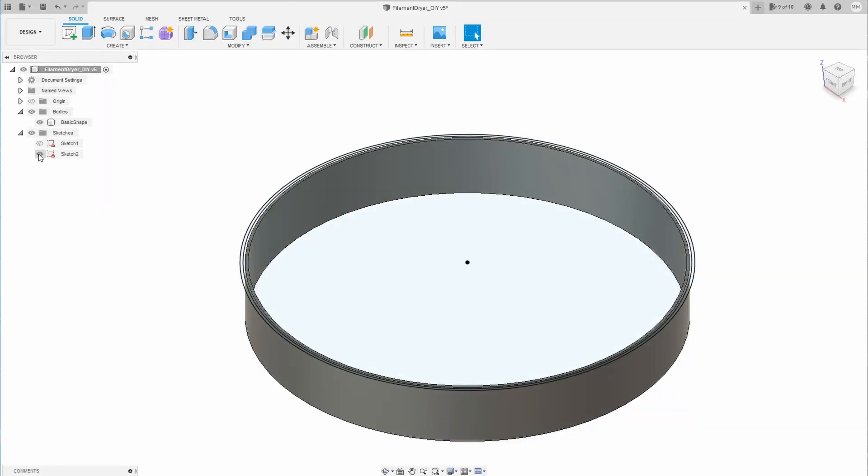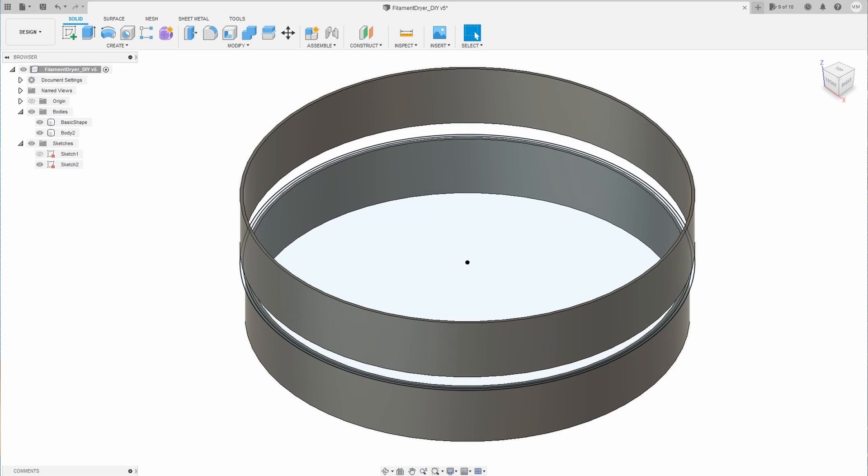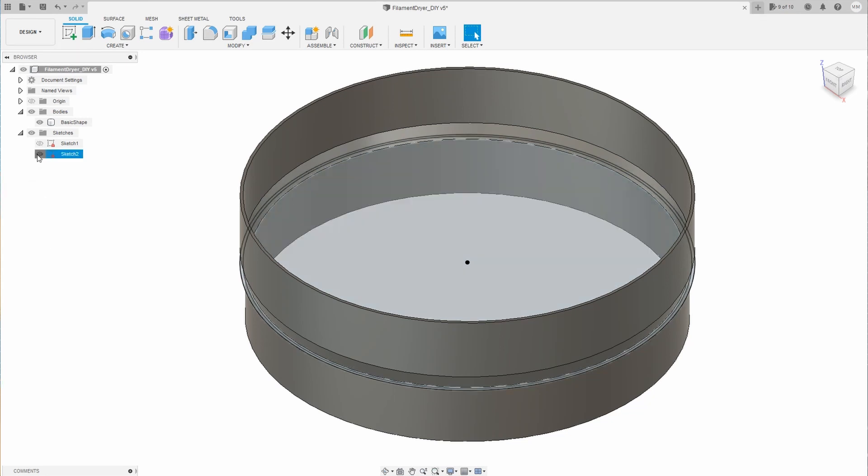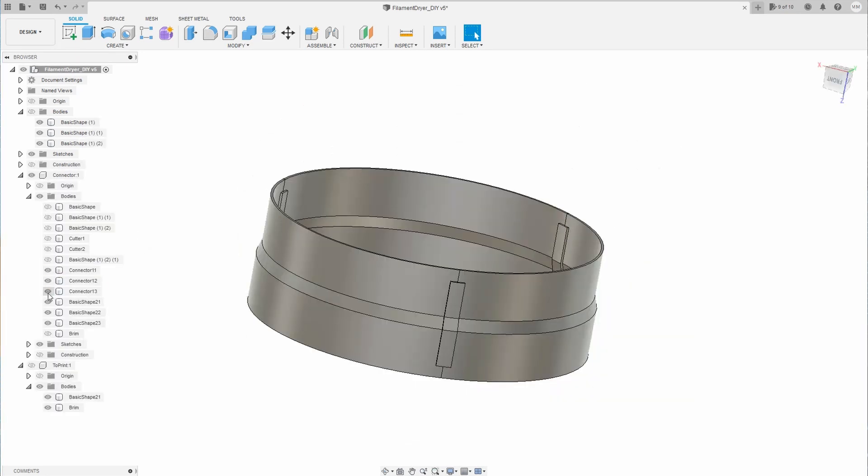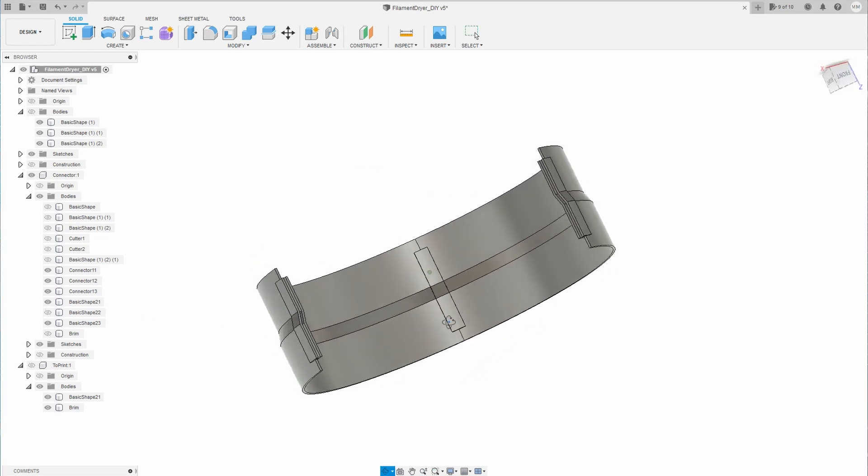So let's quickly design the part in Fusion 360. This is quite a simple one. There are just two circles and you need to extrude them and connect somehow. Because my Prusa build volume is not big enough to print the whole part in one go, I split it into three parts.